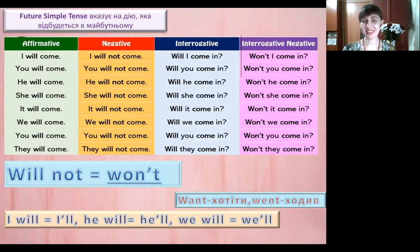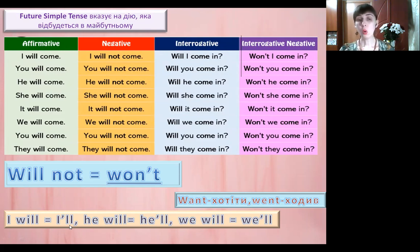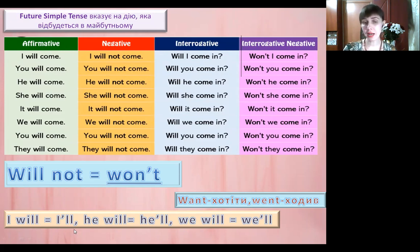So will not is won't. Не плутаємо слово won't зі словом want – хотіти і зі словом went – ходив. Дуже легко поплутати ці слова – confusing English. Also we have the contractions. В текстах ви бачили дуже часто ось такі скорочення: apostrophe and double L. За апострофом і двома літерами L сховалося слово will. I will – скорочення I'll. He will – скорочення he'll. We will – скорочення we'll.